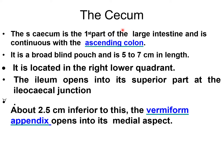About the cecum — it is the first part of the large intestine and continues with the ascending colon. It is a blind pouch, 5 to 7 cm in length, located in the right lower quadrant of the abdomen. The ileum opens into its superior part at the ileocecal junction, and about 2.5 cm below that, the vermiform appendix opens into its medial aspect.